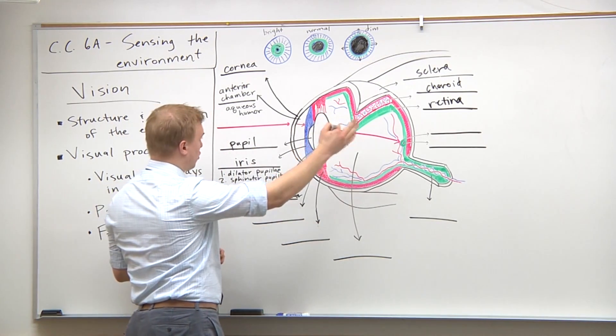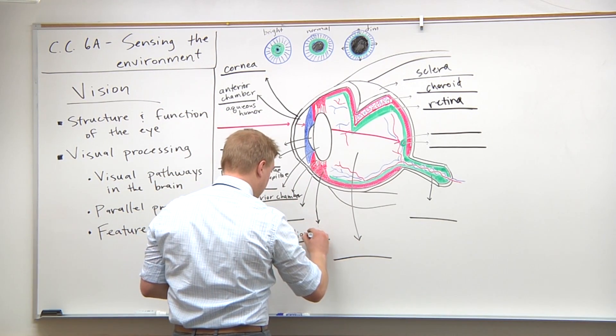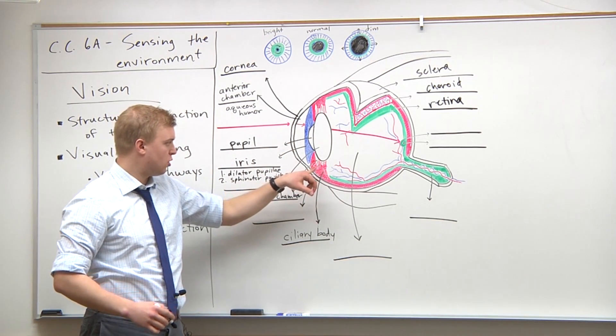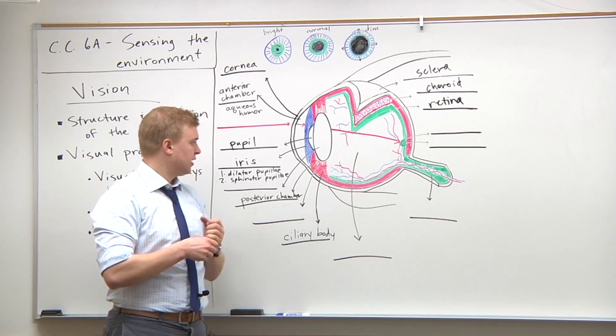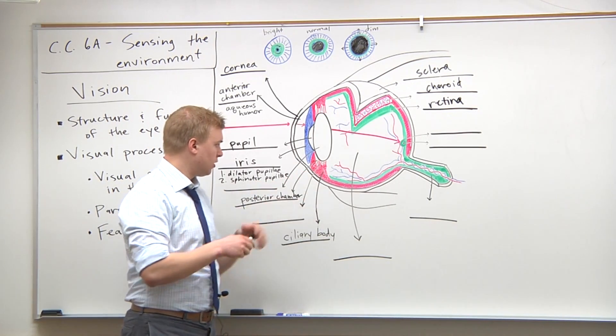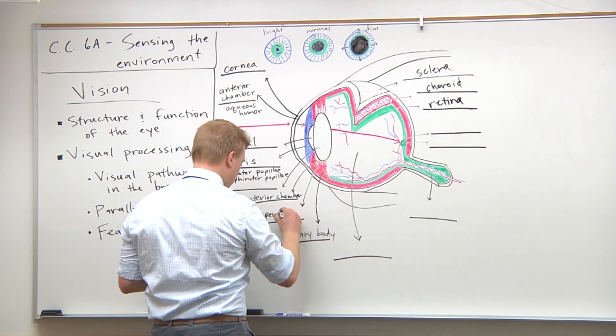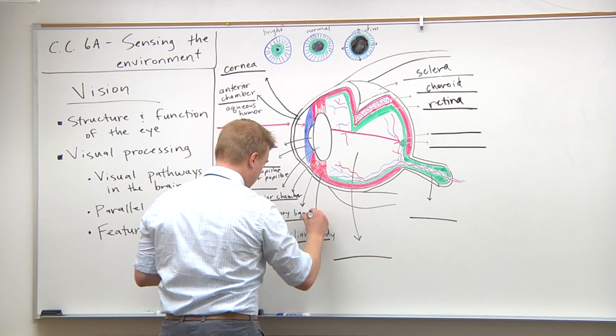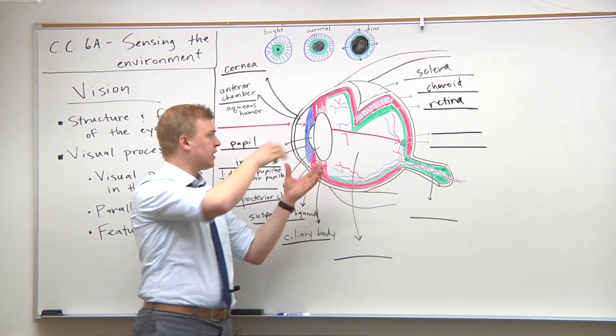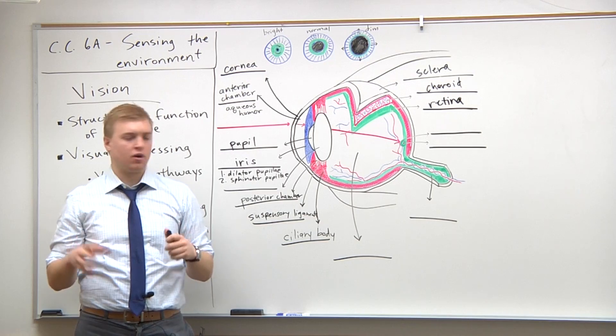The choroid and iris are also continuous with the ciliary body, which is composed of ciliary muscles. In a feature called accommodation, the ciliary muscle pulls on suspensory ligaments, which elongate or widen the lens and allow us to focus the image on the back of the eye and the retina.